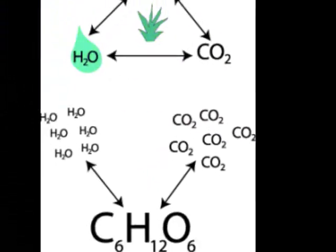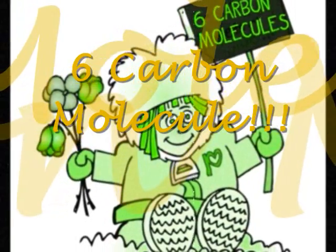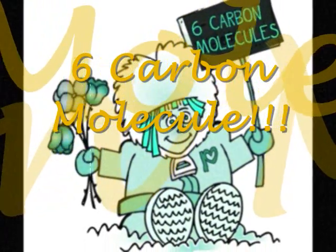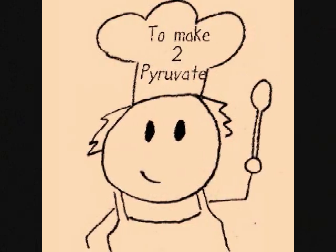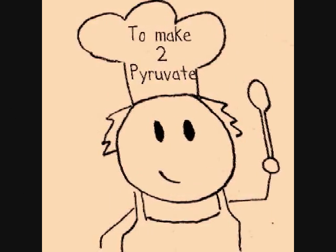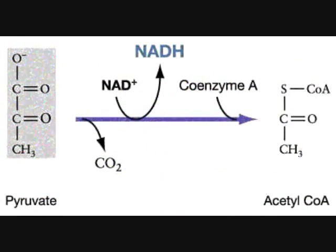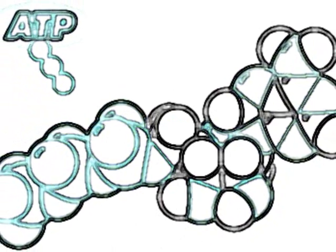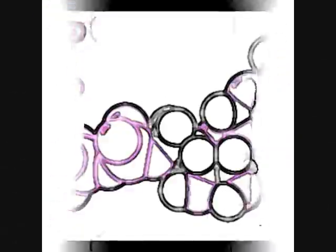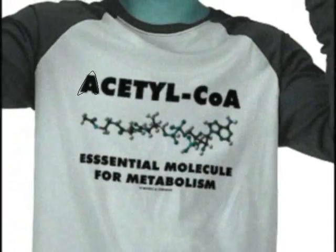Glucose is used in glycolysis, it has 6-carbon molecules to make 2-pyruvate. What do we use to turn glucose into 2-pyruvate? We use ATP, we use ATP to make 2-pyruvate, and then we turn 2-pyruvate into acetyl-CoA.